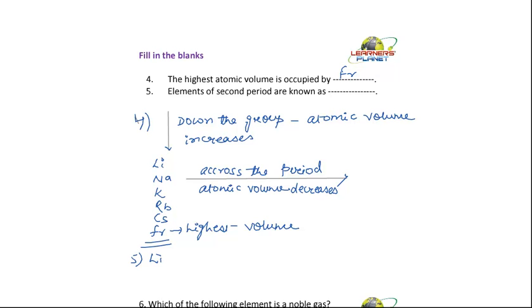Second period elements are lithium, beryllium, boron, carbon, nitrogen, oxygen, fluorine, and neon. Now what is the case, students? Every element is the first element representing its group.